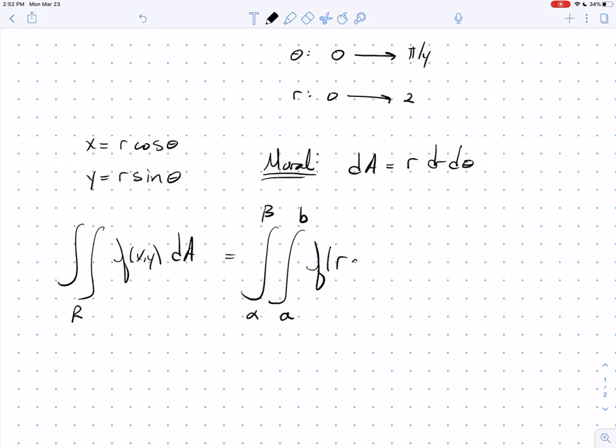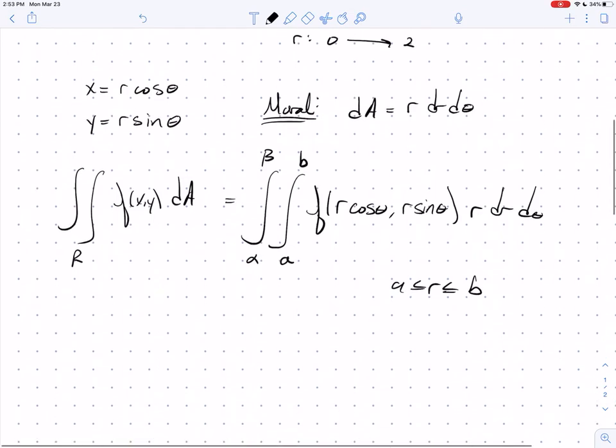Instead of f of x, you're going to have f of r cosine theta. Instead of f of y, you're going to have r sine theta. Then you're going to go r dr dθ, where r is between a and b and theta is between alpha and beta.